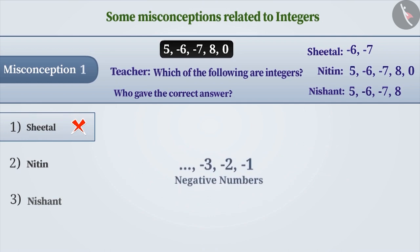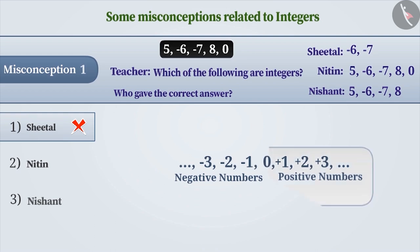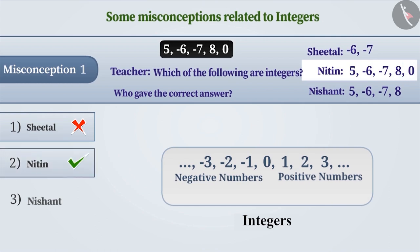The correct understanding is that collection of all negative numbers, all positive numbers and 0 are called integers. The positive numbers are usually expressed without a plus sign. With this correct understanding, Nitin has given the right answer. That is, option 2 is the correct answer.